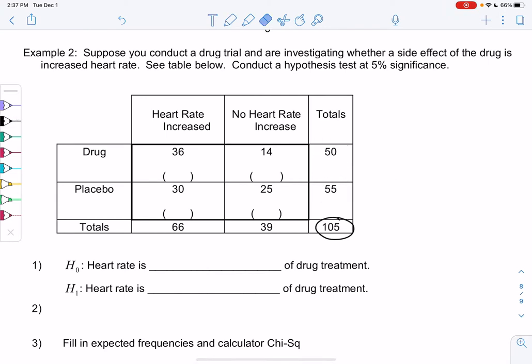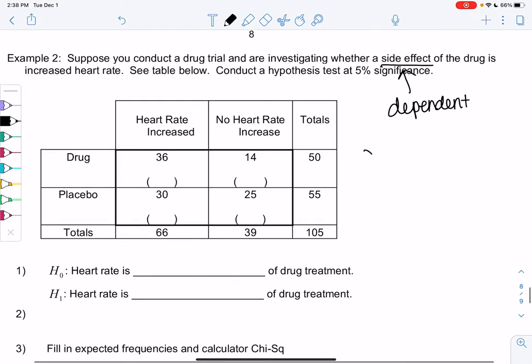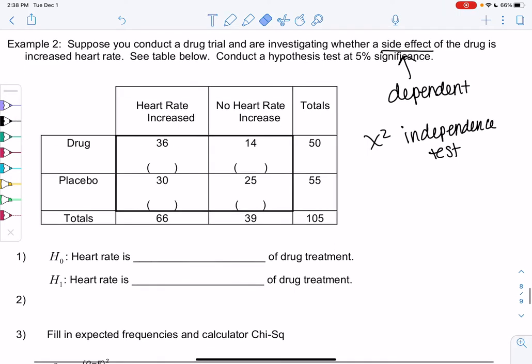So if it's a side effect, that means it's dependent. This is talking about an effect, the chi-square independence test. Notice we have two variables again. We have drug placebo versus heart rate. So we're in the two variable world as well.